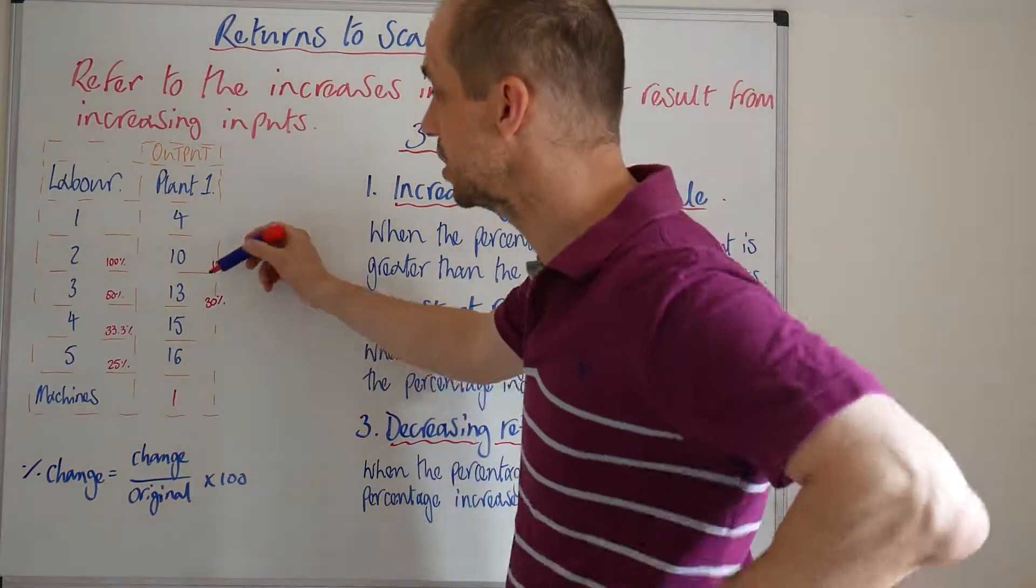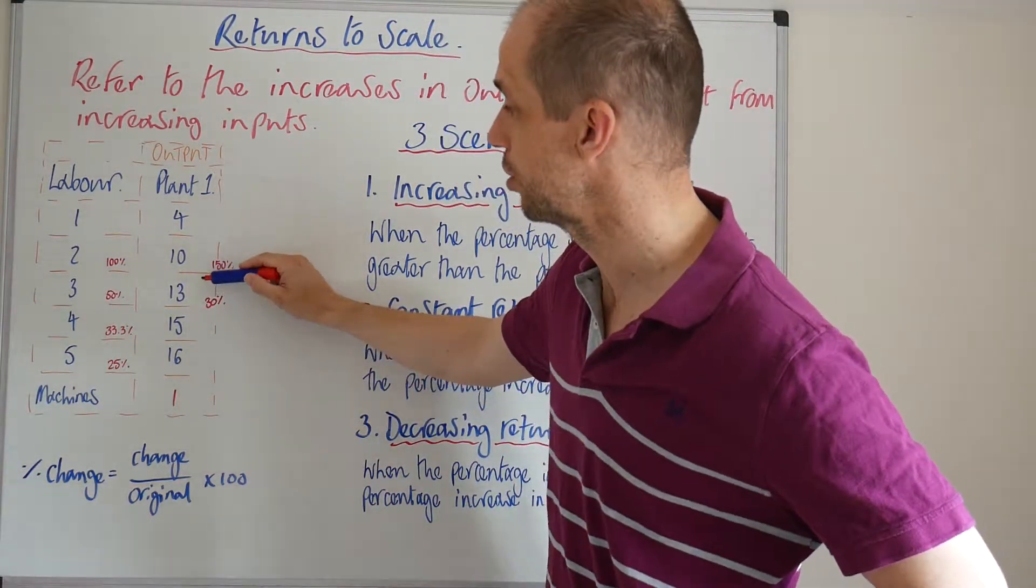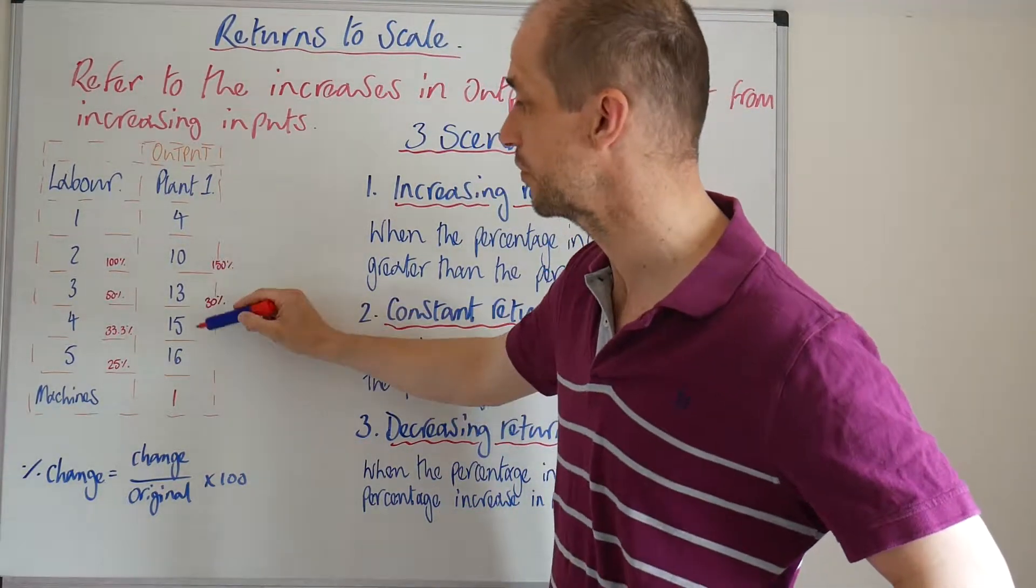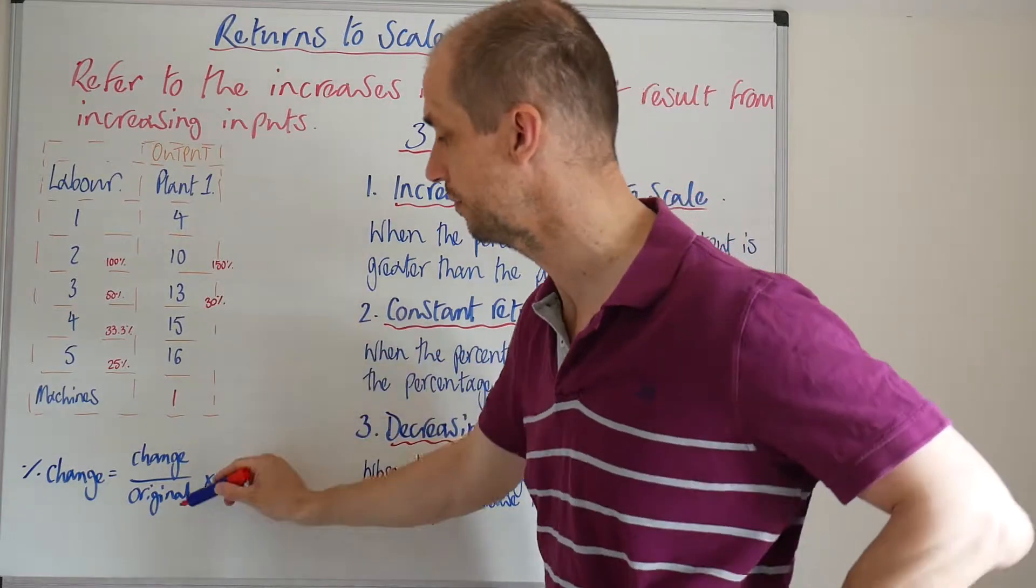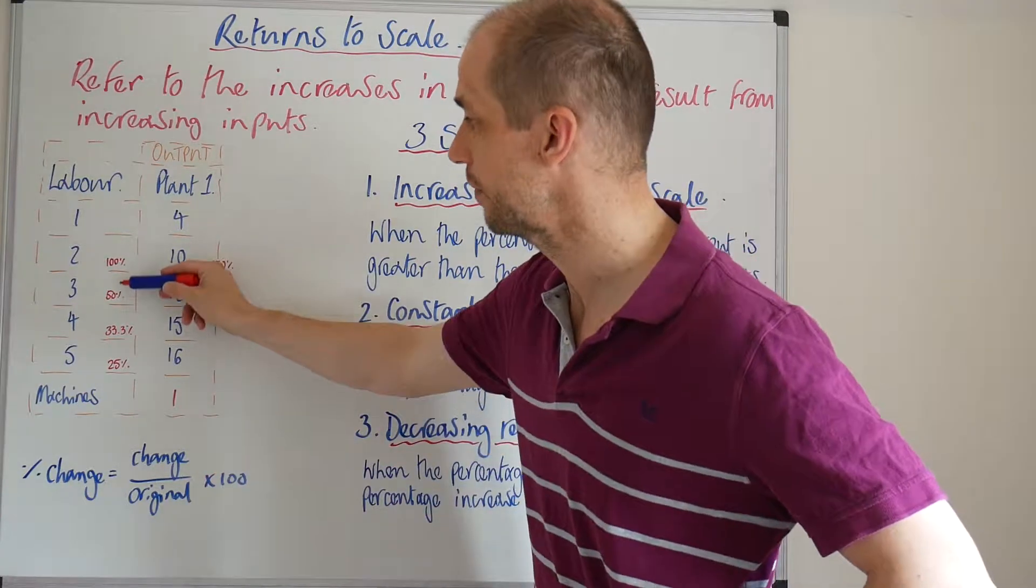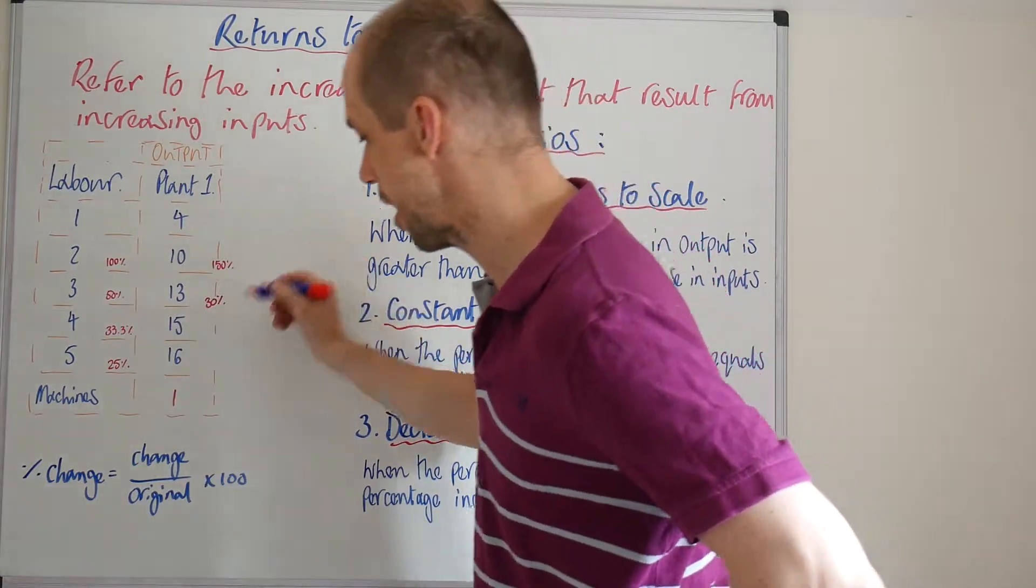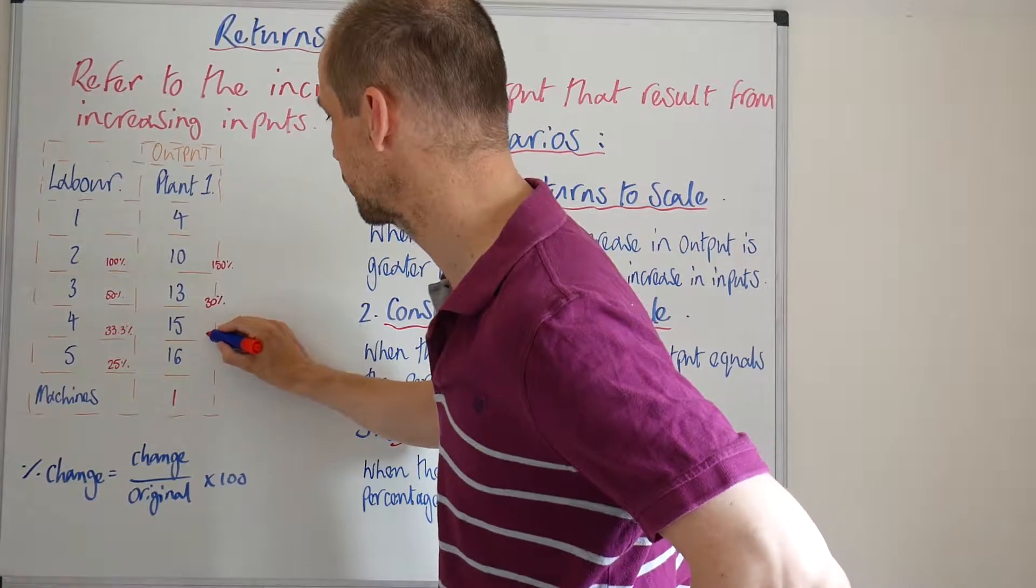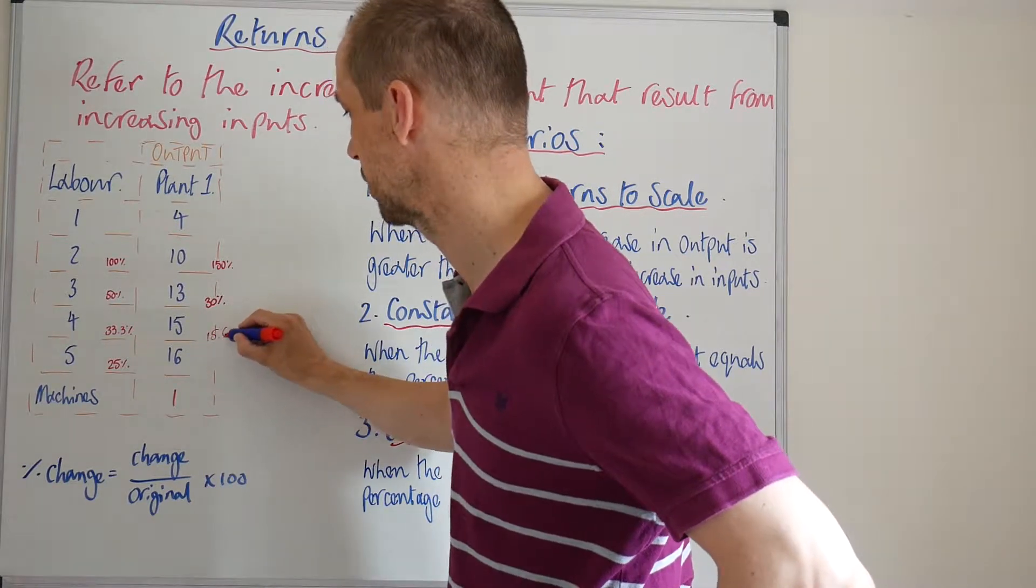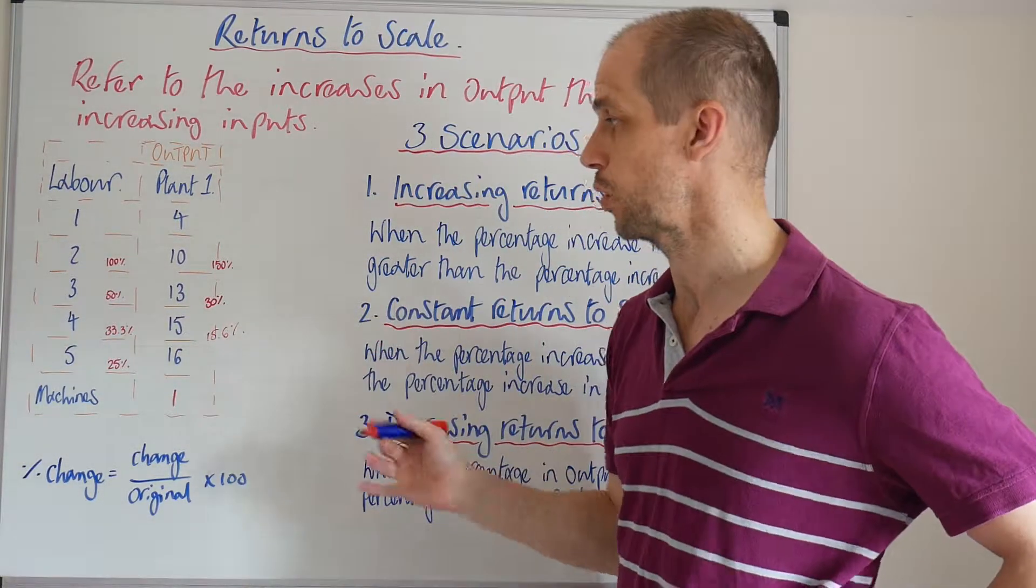We can see this here as we go from 13 to 15. We've got an increase of 2. So 2 divided by 13 here. We've got a 33.3% increase in the labour force. But we would only see something like a 15.6% increase in the actual output.